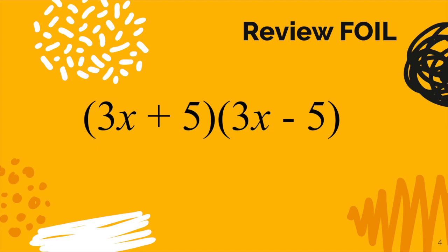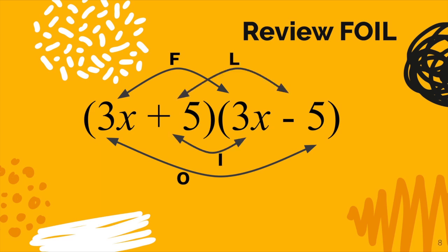Before we get to this, we need to review FOIL real quickly. This is where you're multiplying two binomials and you do the F, the O, the I, and the L, and you multiply in every case. Now I want to look specifically at the O and the I in this particular problem.